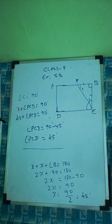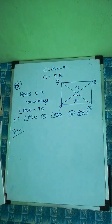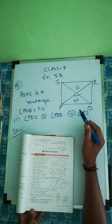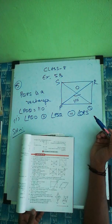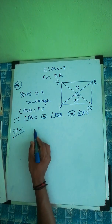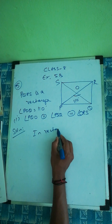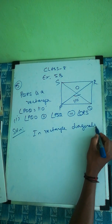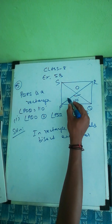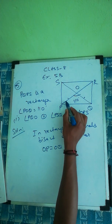Question number 5: PQRS is a rectangle and diagonals PR and QS intersect at O. Angle POQ is given as 110 degrees. Find angle PQO, PSQ, and ORS. In a rectangle, diagonals bisect each other, so OP equal to OQ.